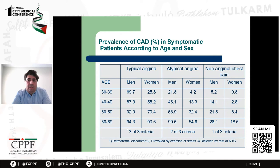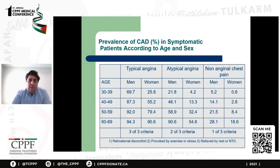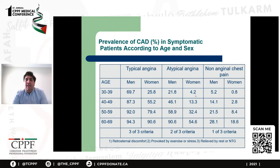In general, the older the patient, the higher the chance of the pain being related to coronary artery disease. Typical pain further increases the chance. Males have a higher chance compared with females. If you see a male patient in his 60s with a typical description of pain, the likelihood that the pain is related to obstructive coronary artery disease is more than 90%. Compare that with a female in her 30s or 40s with non-anginal or atypical chest pain — the likelihood of coronary artery disease is very low, less than 10%.